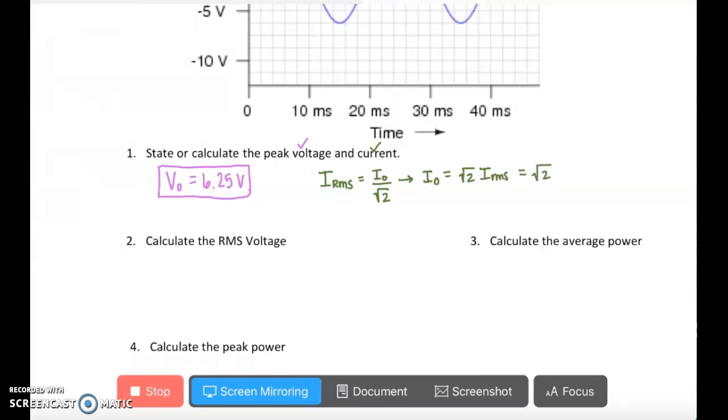Plugging in our values here, and that comes out to be 1.70 amps. So we've now found our max or our peak voltage and our max or our peak current.